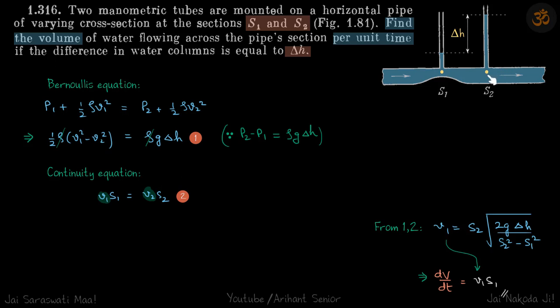Which pressure is higher? At the second point. So p2 minus p1 is rho g delta h. From here we get the first equation: half v1 square minus v2 square is equal to g delta h.